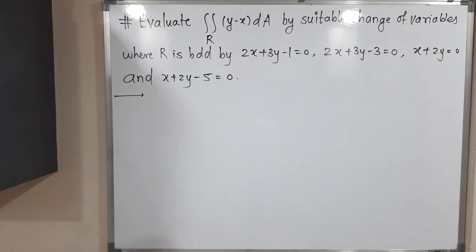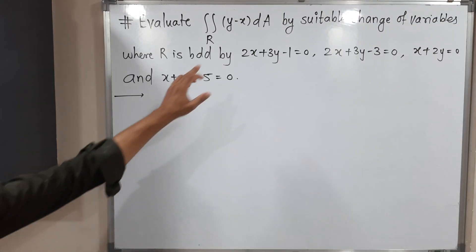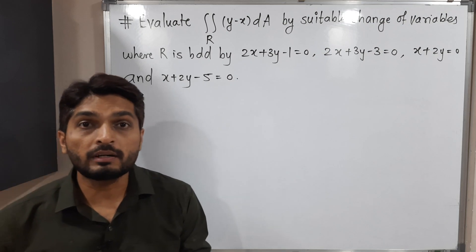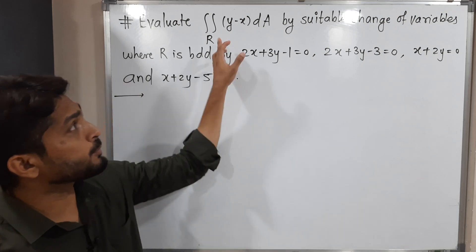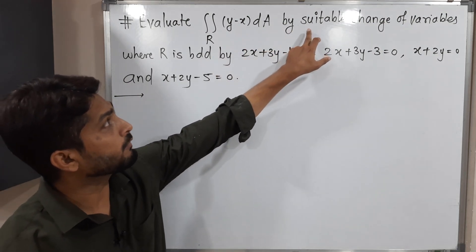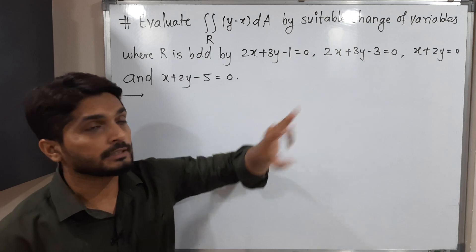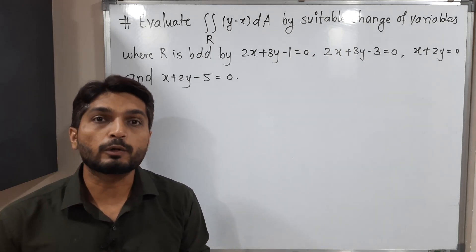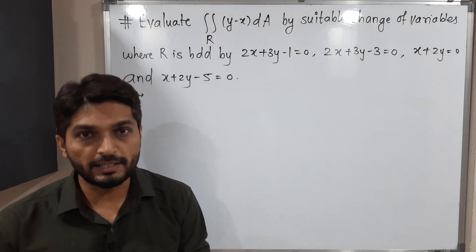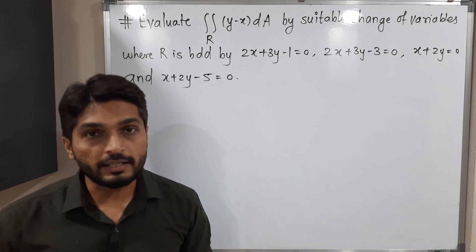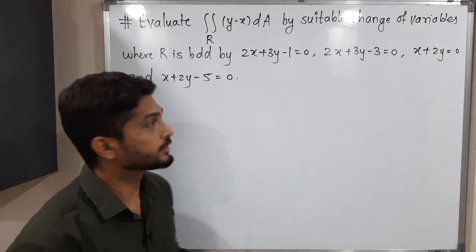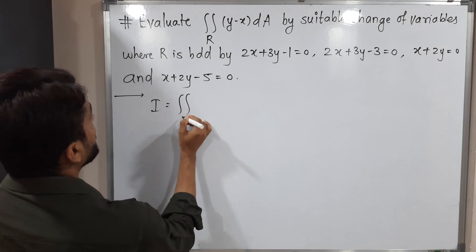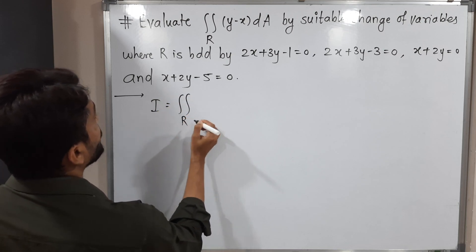In this video we are going to solve a double integration problem. They have given one condition: we have to solve this problem with the help of a suitable change of variables — that means we have to change the variables and then solve this double integration. The given integral is I equal to double integration over region R of (y minus x) dA.